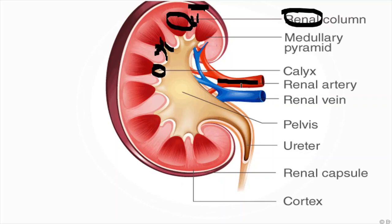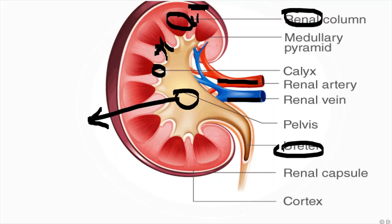The renal artery, renal vein, this is the renal pelvis — this is also important because infection of the pelvis can be called pylitis. This is the ureter. The outer covering is the renal capsule. This part is the cortex; this part is the pelvic calyx system. The stones are more common here. Understanding these kidney parts is very important to understand the nephrological syndromes.